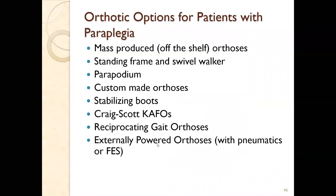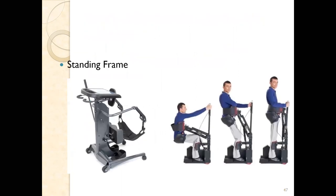Orthotic options for patients with paraplegia include mass-produced orthotics, standing frames, swivel walkers, parapodiums, custom-made orthoses, stabilizing boots, Craig Scott KAFOs, RGOs, and externally powered orthoses using pneumatics or FES (functional electrical stimulation). A standing frame has a sling in which the patient sits; a pump then pulls them into a standing position. Getting patients up into standing is important for weight-bearing through the femur, which is important for blood development and stem cell development.